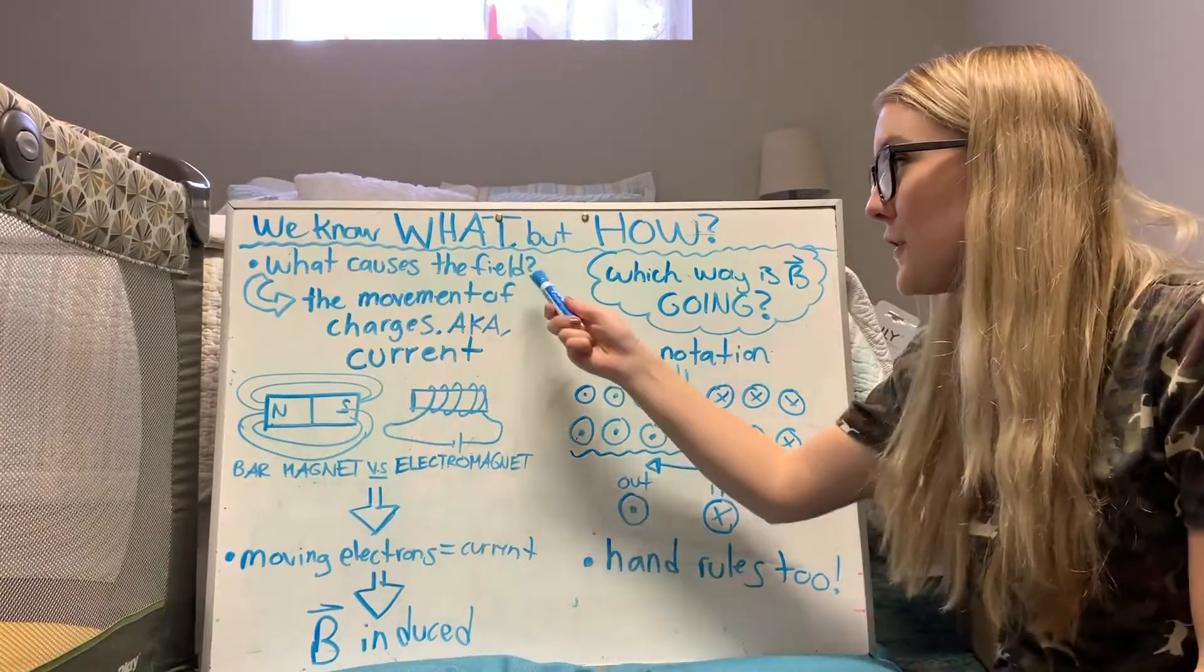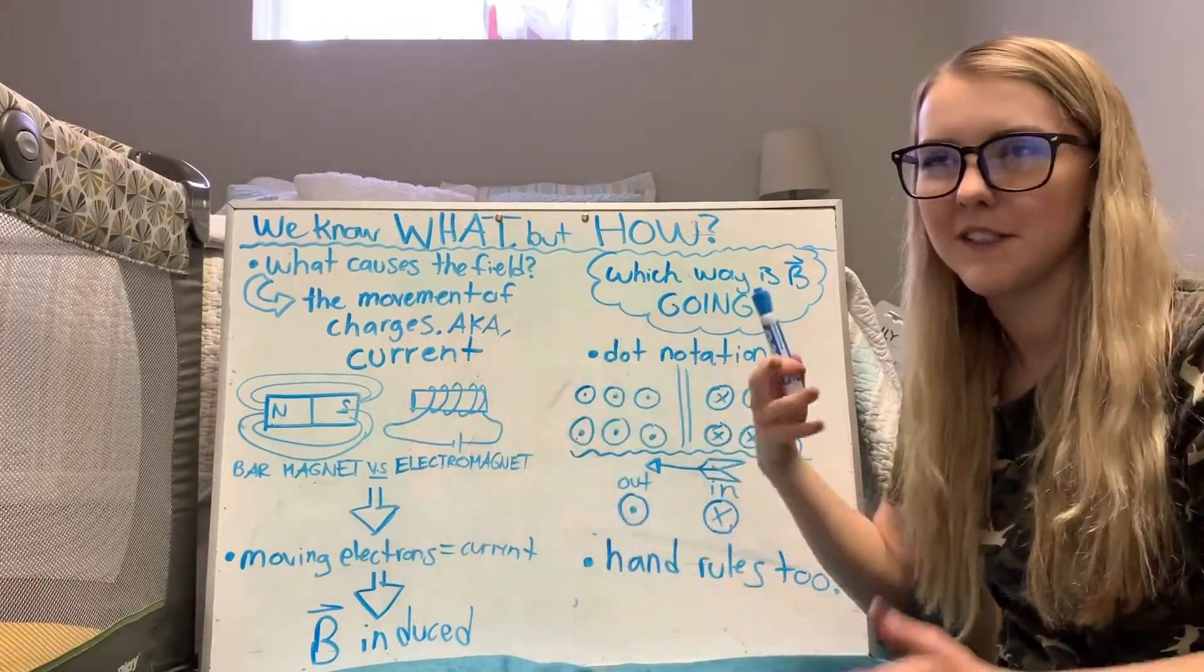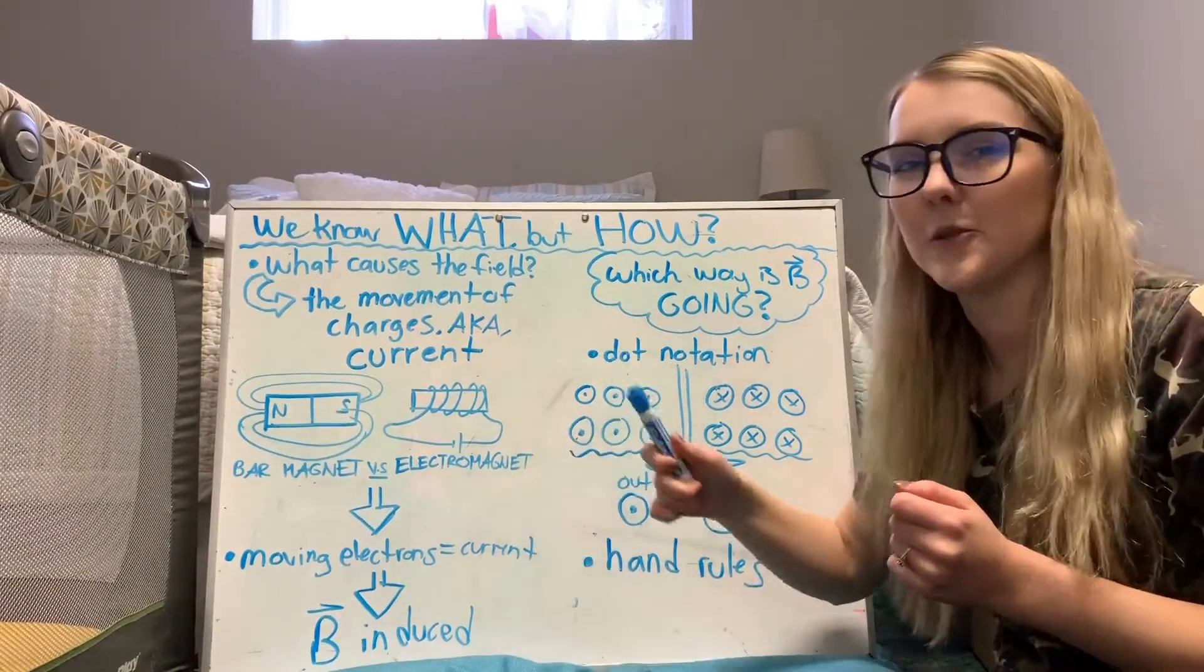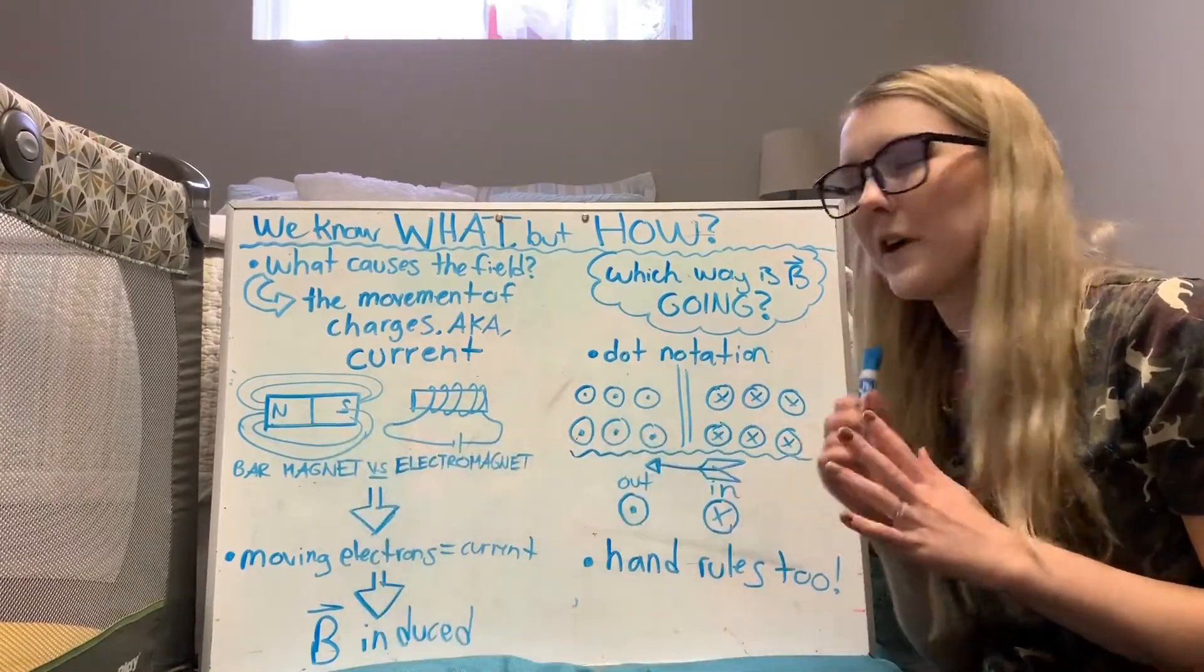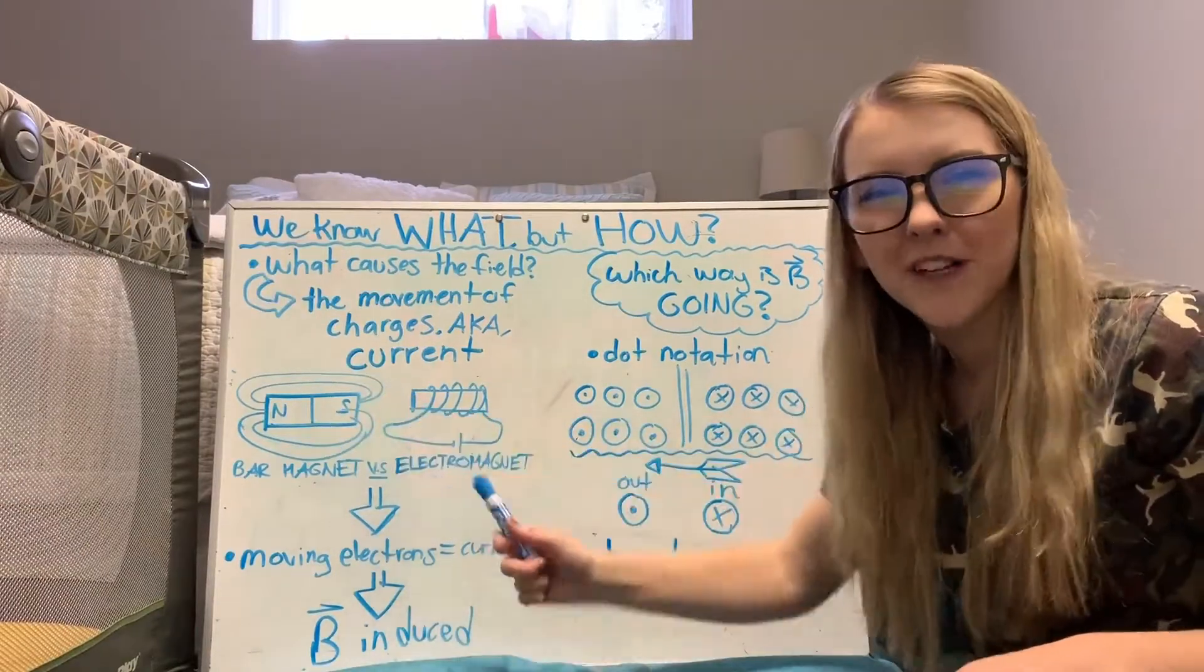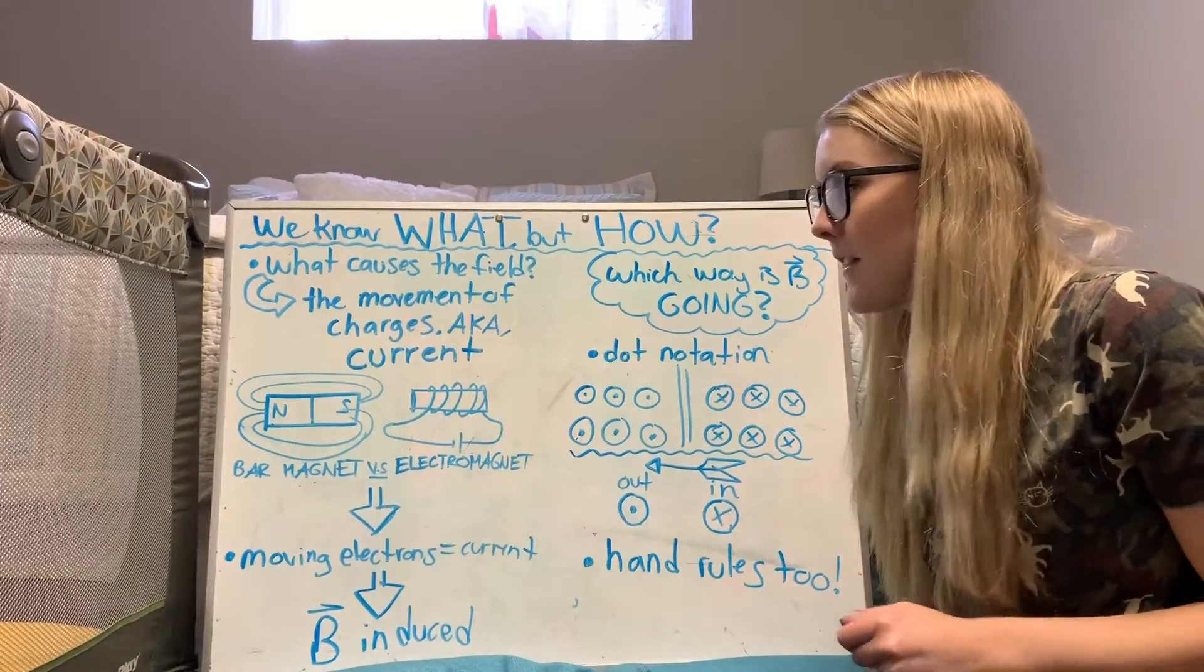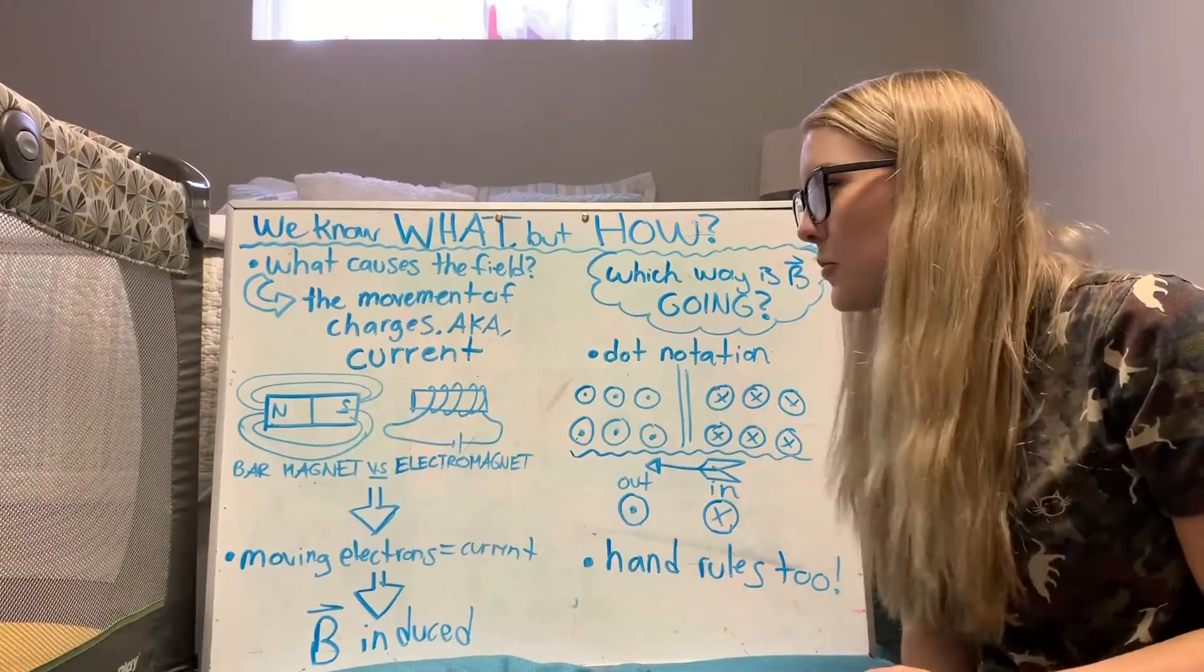So the source of fields and of magnets is the movement of charges, which is basically another way of saying current. So I've drawn two examples down here to kind of show you and explain. So this is a bar magnet and right away you might be thinking to yourself there's no electric current going on, where is the current that's making this field?